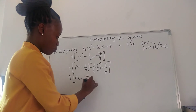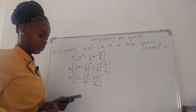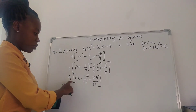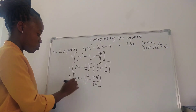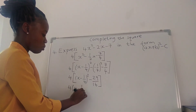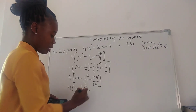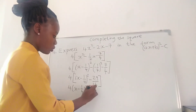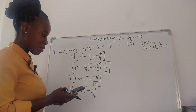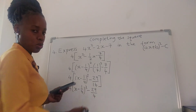So we have 4 times x minus... negative 2 divided by 2 is negative 1 quarter. So you square, you subtract — you always subtract this. Negative 1 over 4 squared minus 7 over 4. We get negative 29 over 16. So we're going to simplify: 4 times x minus 1 over 4 squared minus 29 over 4.